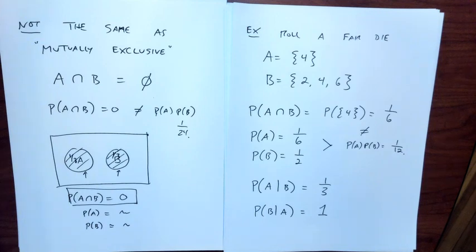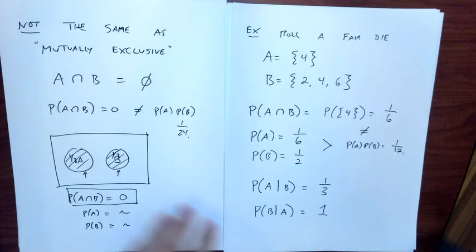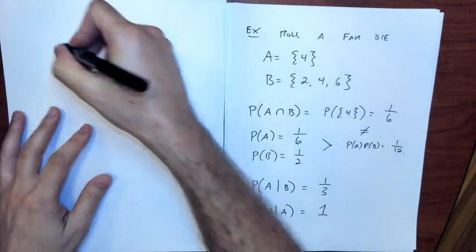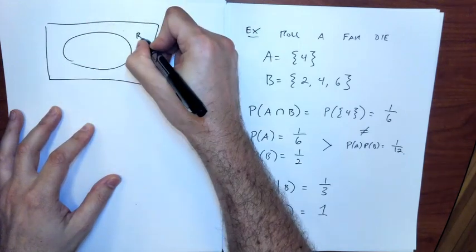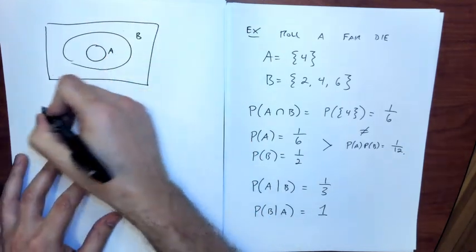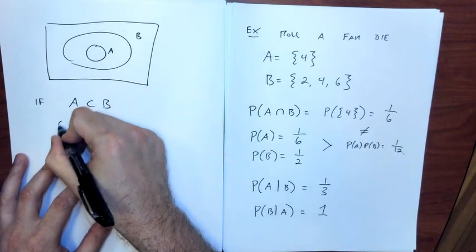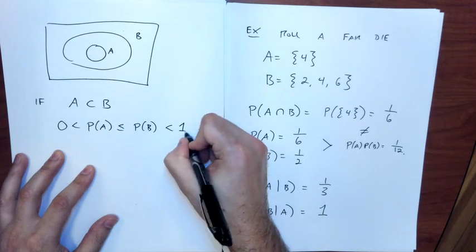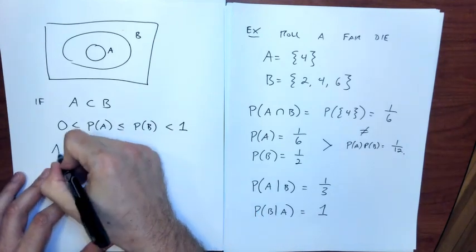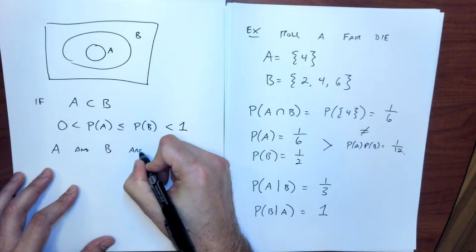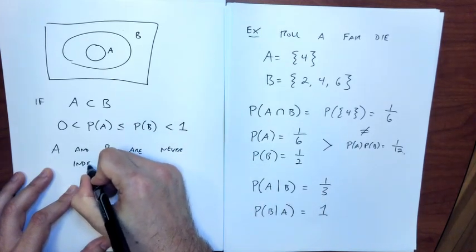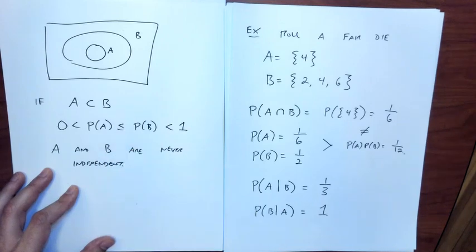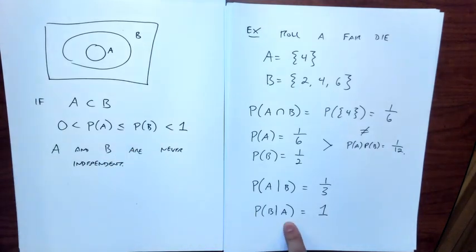In general, what's happened here is that A is a subset of B — it's fully contained inside B. So whenever A is a subset of B and both events have nontrivial probabilities — not the whole sample space and not zero probability — then A and B are never independent. The probability of B given A equals one, while the product of their individual probabilities is likely some small number.